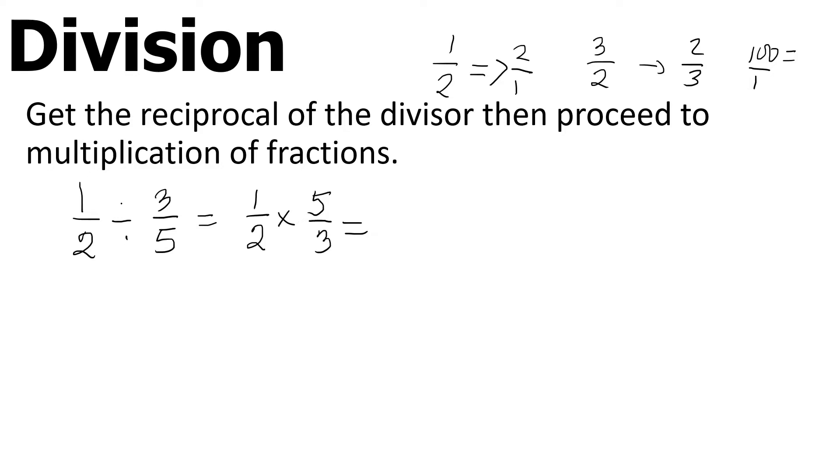Then proceed to multiplication: one times five equals five, two times three equals six. It's that basic. You can also use a shortcut by cross-multiplying directly. Copy one half divided by three fifths, then cross-multiply: one times five equals five on top, three times two equals six on the bottom. That way you don't need to find the reciprocal as a separate step.